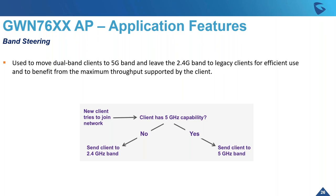The next application feature is band steering. As a dual-band device, you can steer clients to a particular band depending on your client distribution. For example, you may have legacy Wi-Fi clients that support 2.4 GHz only, and just a few that support dual-band. To reserve bandwidth for those legacy devices, you can steer the dual-band capable devices to the 5 GHz band. You can steer toward 2.4 GHz, toward 5 GHz, or let the GWN auto-balance depending on how many clients it has.